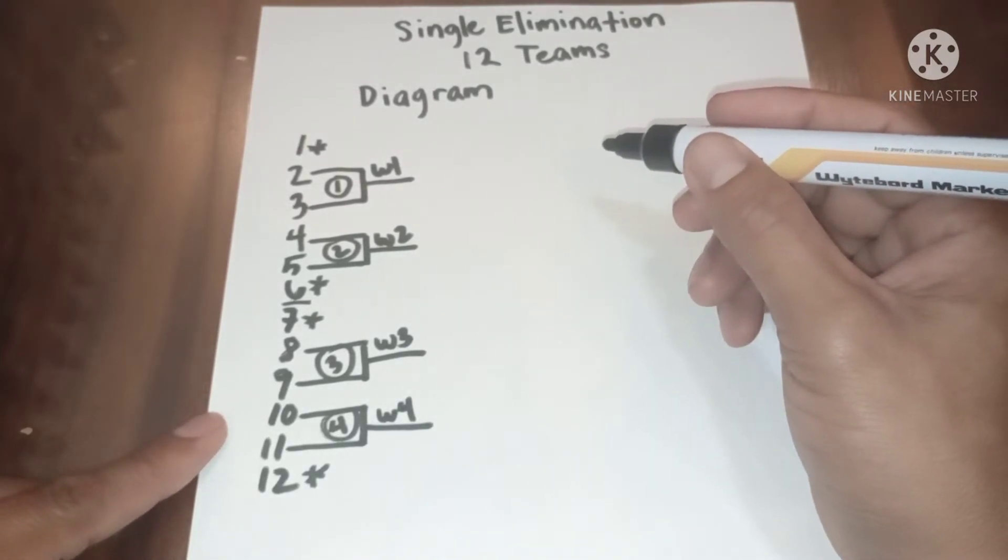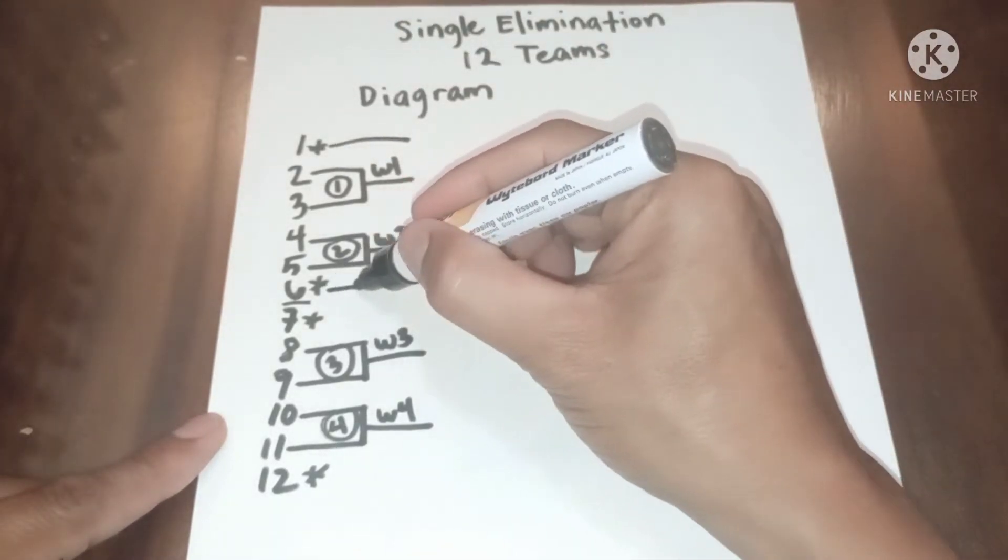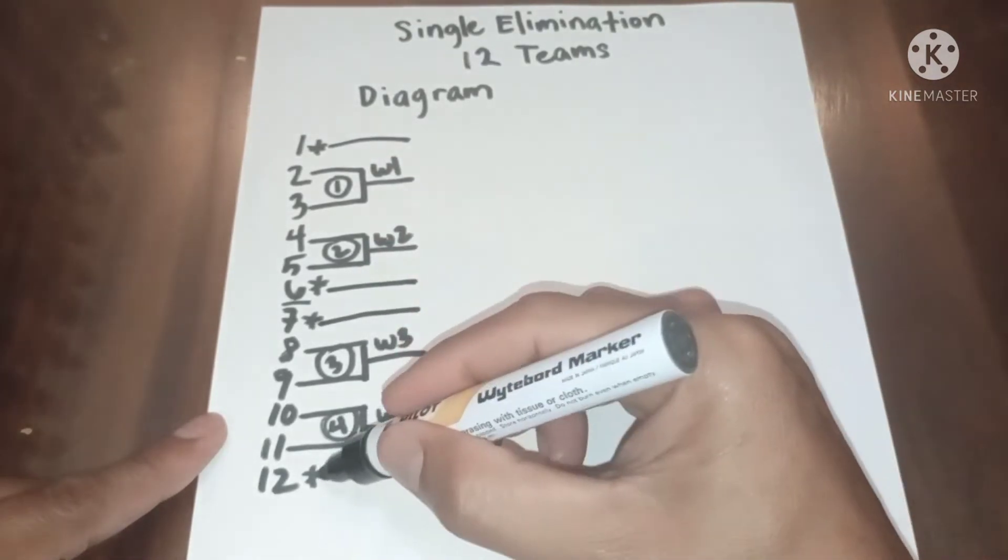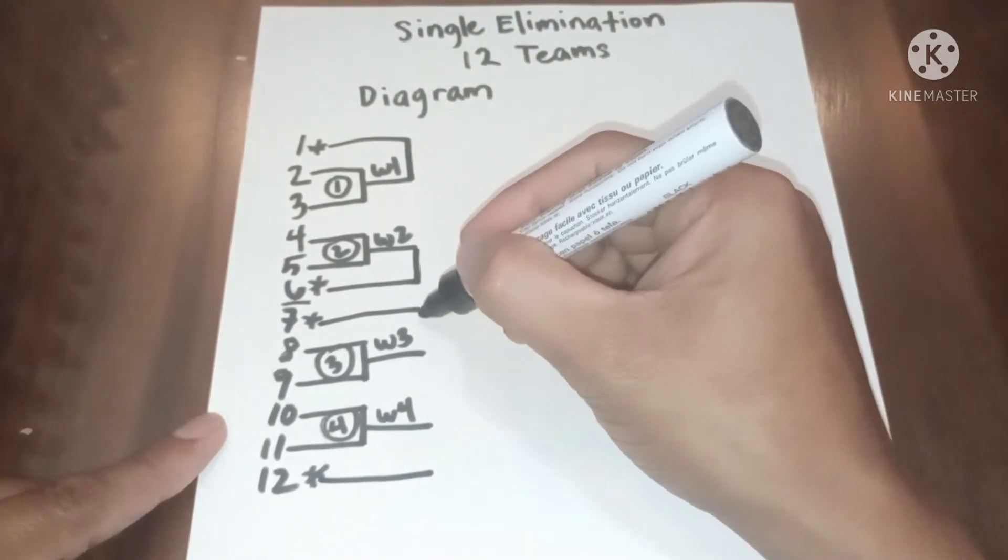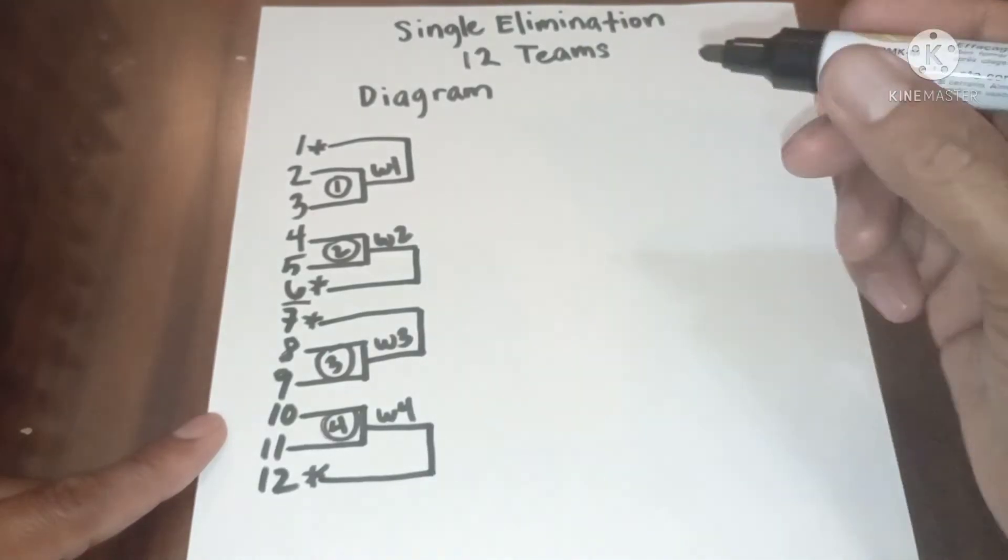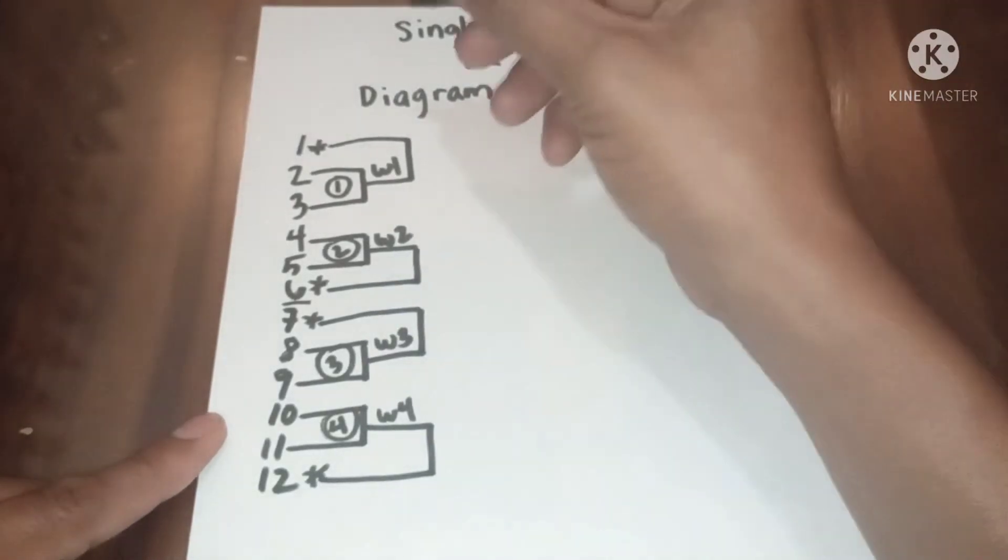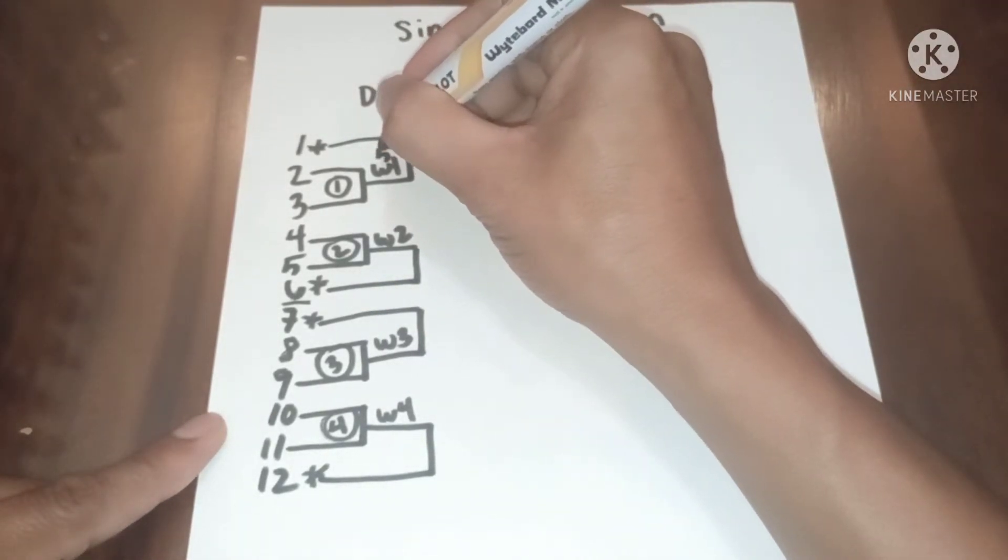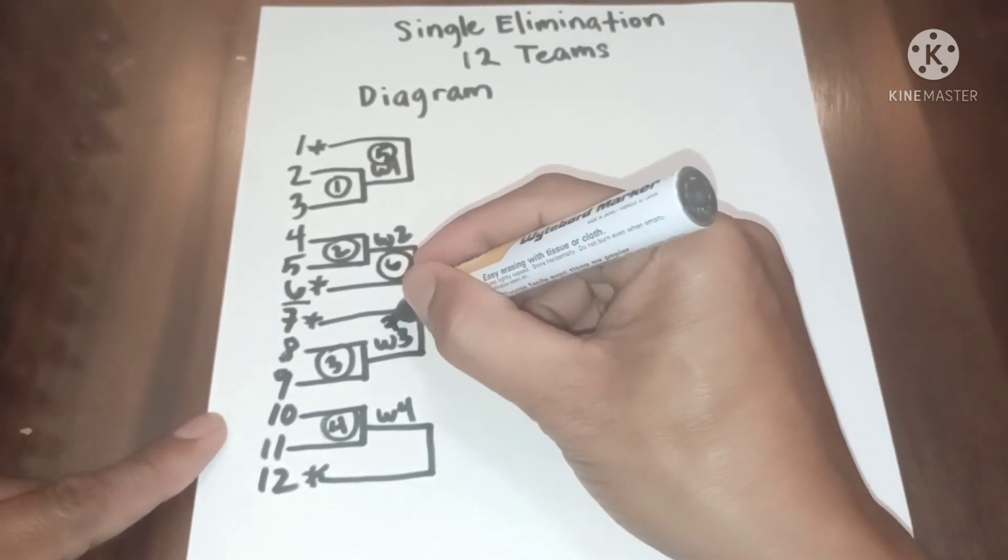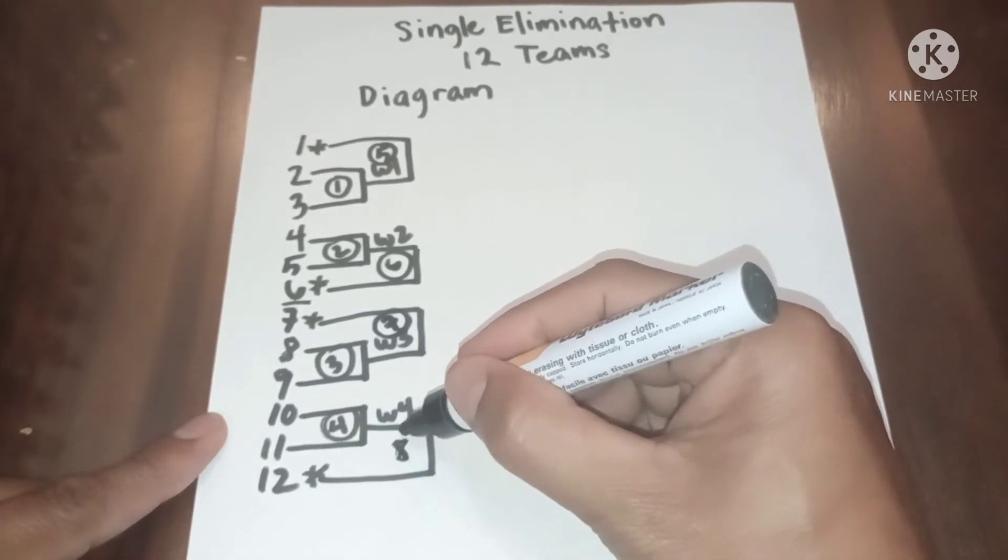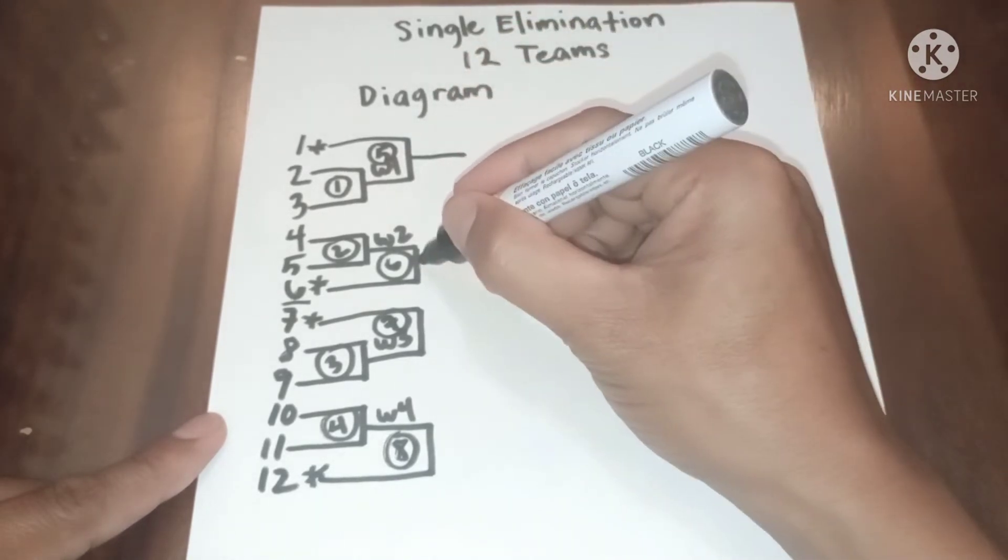Now let us proceed to the second round. The bye can now play in the second round. So this will be 4, this will be 5, 6, 7, 8. Now let us have the result from the top.